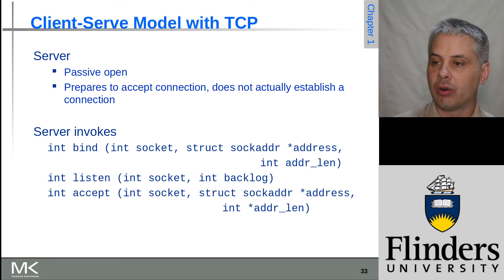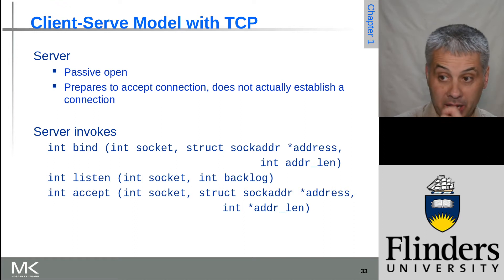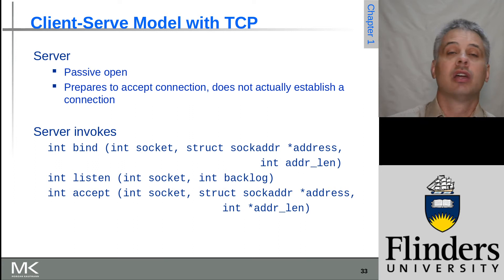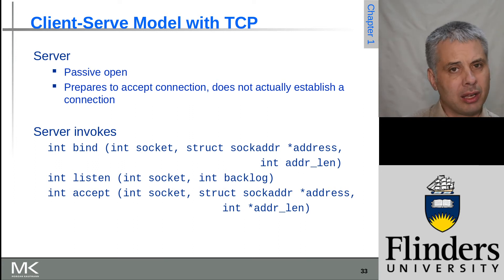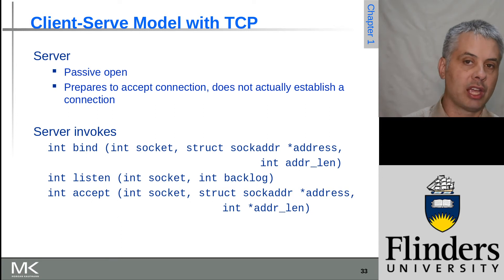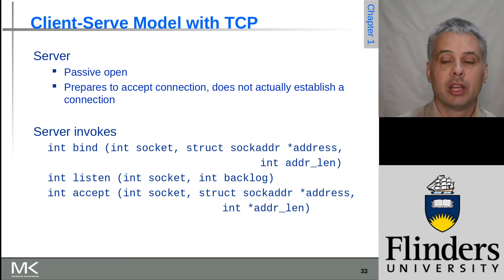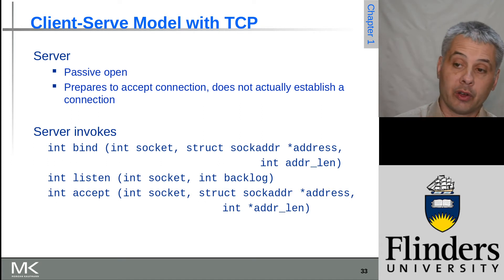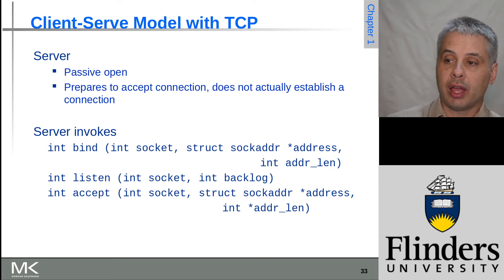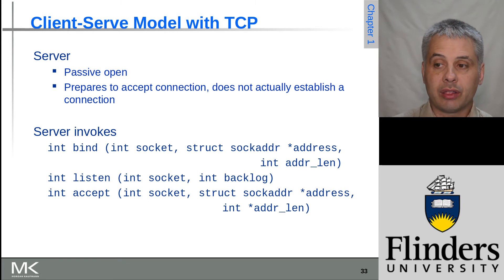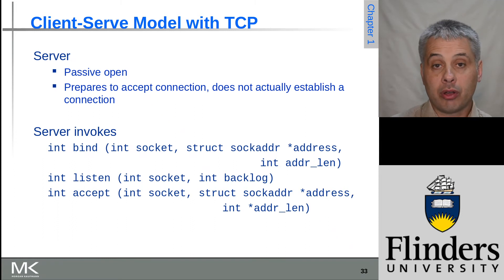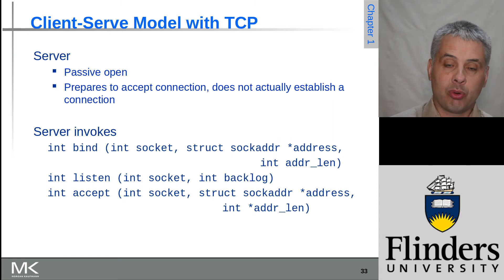Listen tells the operating system that you want to listen for incoming connections and how many are allowed to be queued up — this is what the backlog argument lets you specify. You might say you only want one at a time and any more get rejected, or you might allow a backlog of 10, 20, 50, or 100. With bind, the address and address-length fields let you specify the network address and protocol address to bind to.